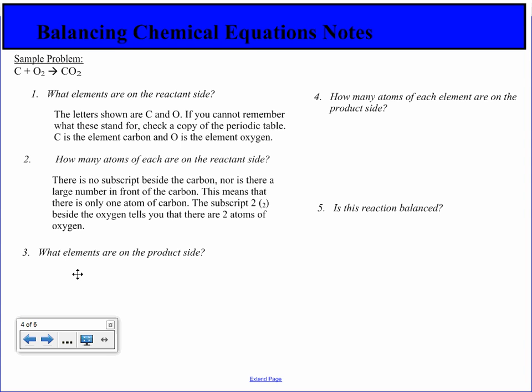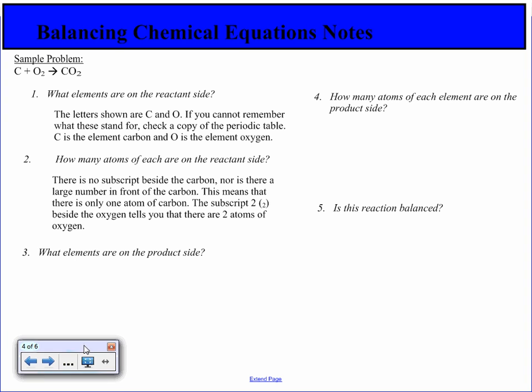How many atoms of each are on the reactant side? There is no subscript beside the carbon, nor a large number in front of it. This means we have only one atom of carbon. The subscript 2 beside the oxygen tells us there are two atoms of oxygen.